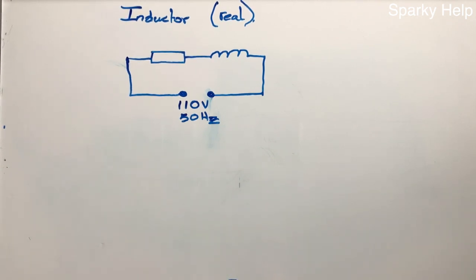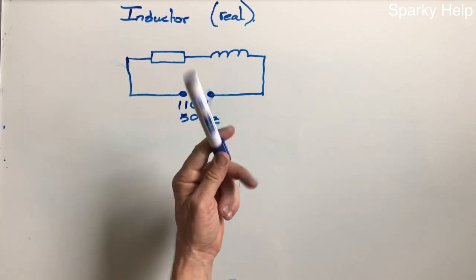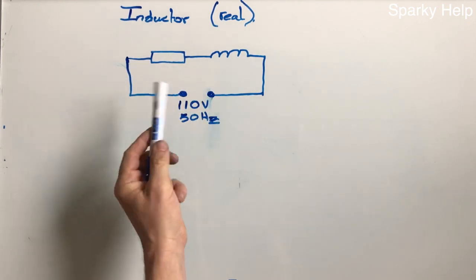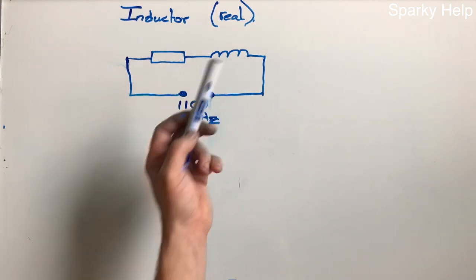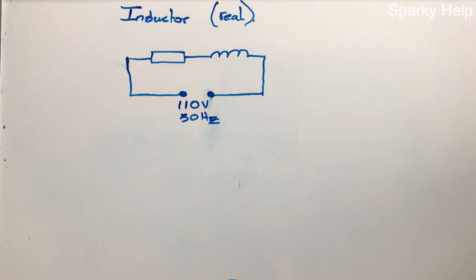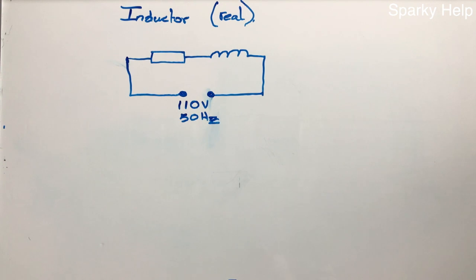Here we have a real inductor. A real inductor is made up of real wire, and therefore it is coiled. Because it is made of copper wire generally, it will have a resistance. The resistance we tend to show is in series with the inductive part of the circuit, so this whole thing represents a real coil.